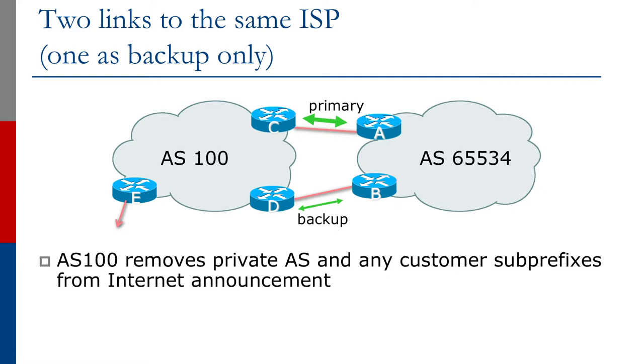With this setup, the backup link announces the slash 19 with an increased metric, and the inbound default route is tagged with a lower local preference. This ensures the backup link functions as designed. If either link fails, the other becomes the primary path, ensuring continued connectivity between the end site and the operator.